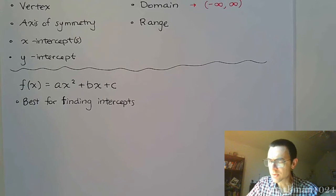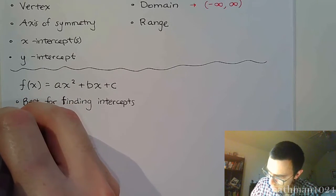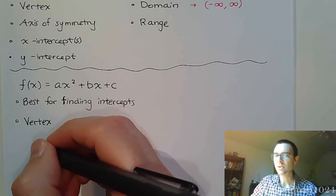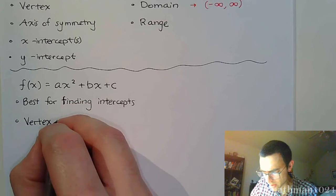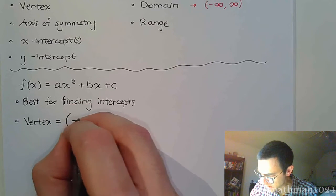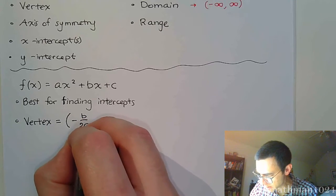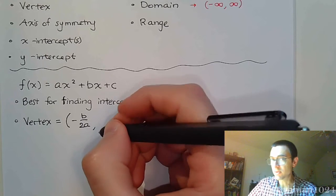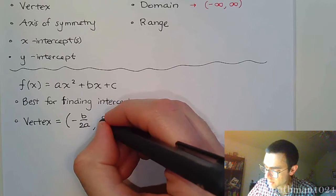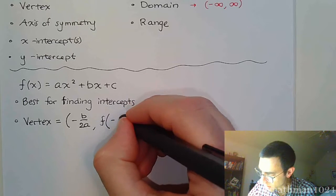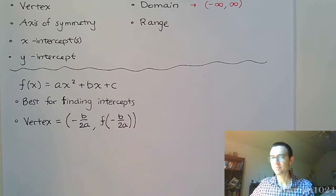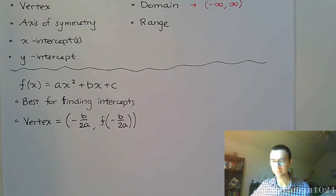And we'll talk about the process for finding intercepts here in just a second. The vertex, the vertex looks kind of messy. It's really not all that bad, you just have to be careful. It's negative b over 2a, that's going to be the x-coordinate, and since this is a function, if you have the x-coordinate, then you can easily find the y-coordinate simply by plugging that value into your function.